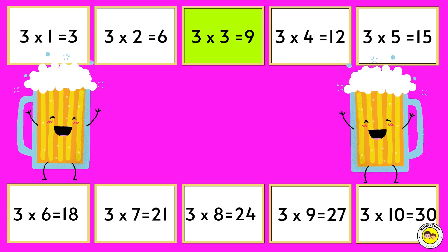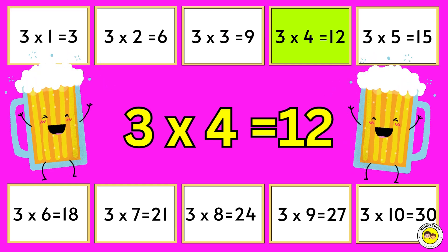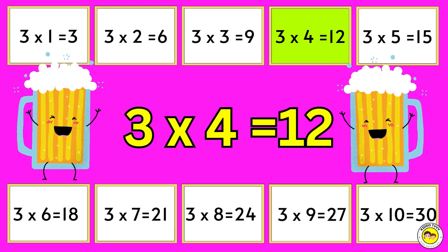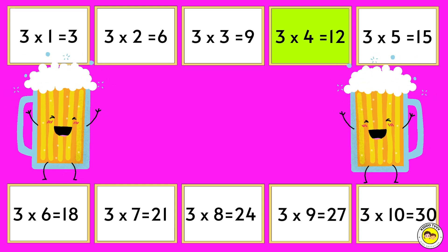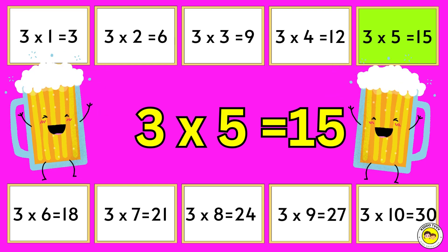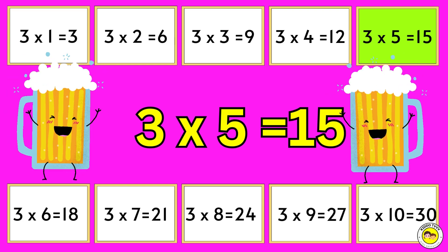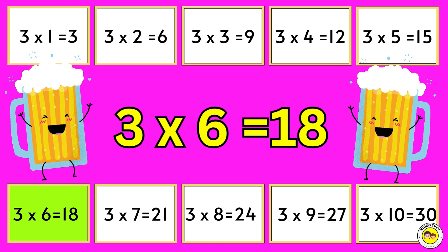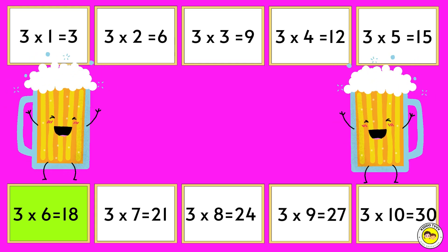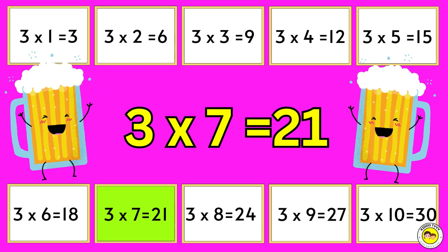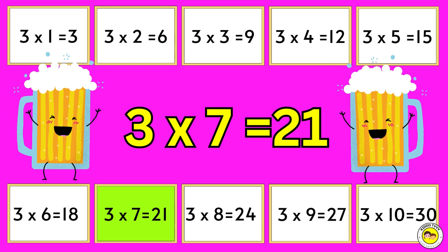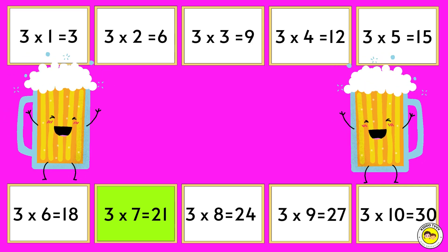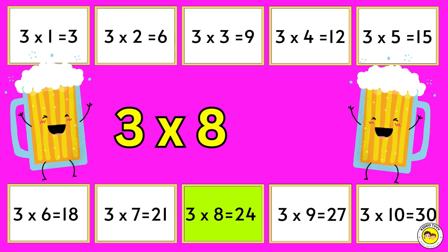Three times four equals twelve. Three times five equals fifteen. Three times six equals eighteen. Three times seven equals twenty-one. Three times eight equals twenty-four.